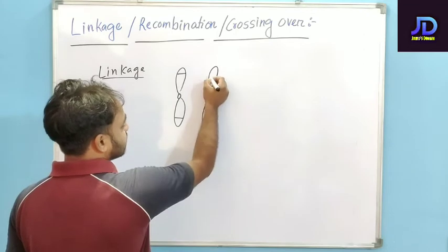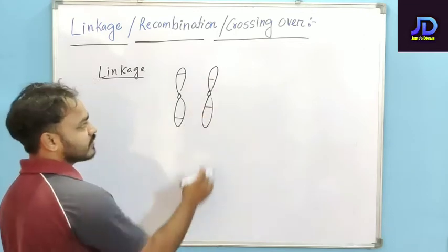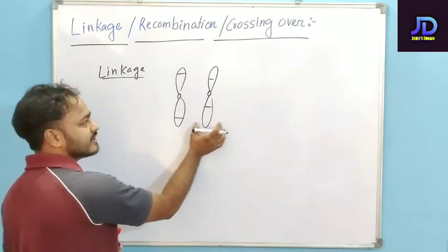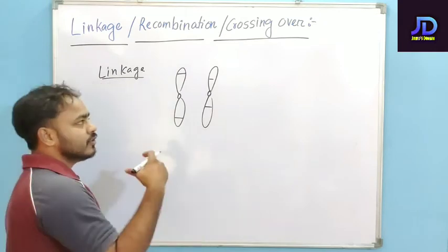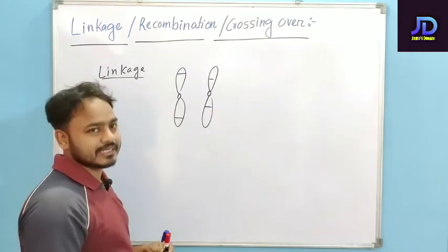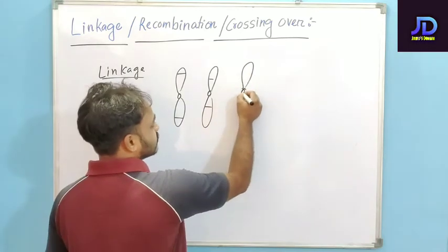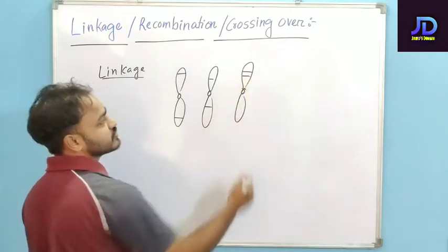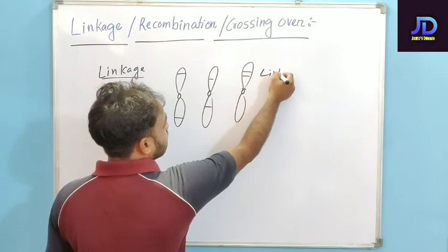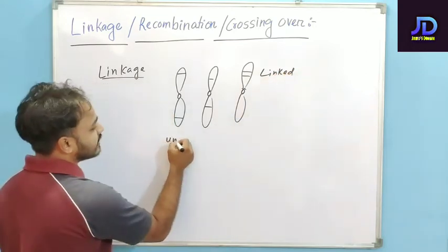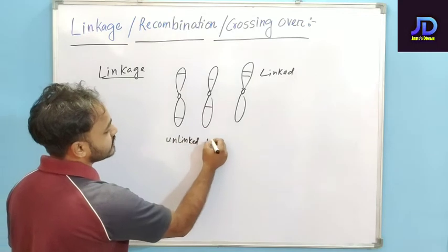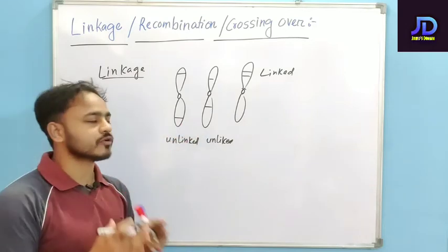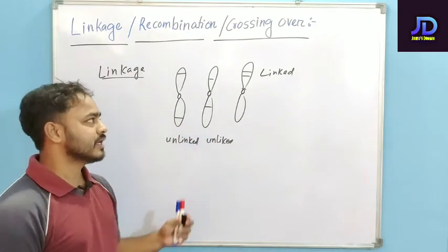In another case, when genes are comparatively closer than the previous chromosomes, there will be some linkage tendency, but still they are not linked. When genes are very close to each other on the same chromosome, they will be called linked genes. Genes that are farther apart are unlinked, but the linkage tendency increases as distance decreases.